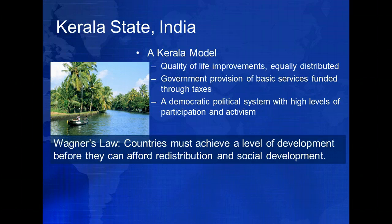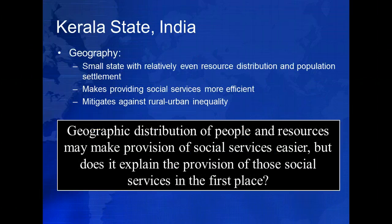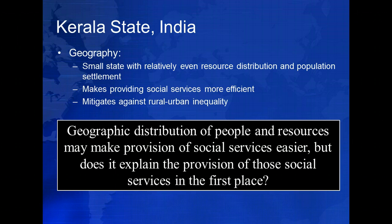In many countries, though, this never came. But Kerala took the opposite path. It pursued redistribution and social development first. But why was Kerala able to make such advances? We can posit several reasons. Kerala's geography made the distribution of social services easier. Its relatively small size and high population density meant that the traditional problems of delivering resources to small, diffused settlements could be avoided. The provision of social services was made more efficient. But this geographic explanation can only help explain how the process was made easier. It does not explain why Kerala would choose such a path in the first place.